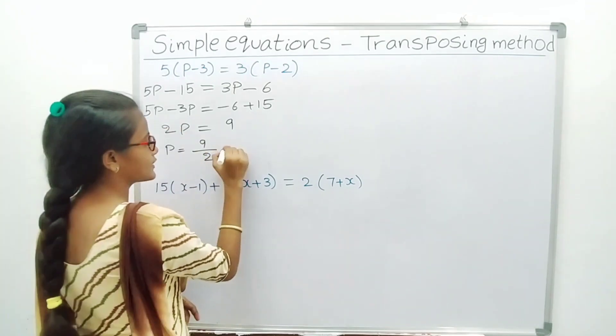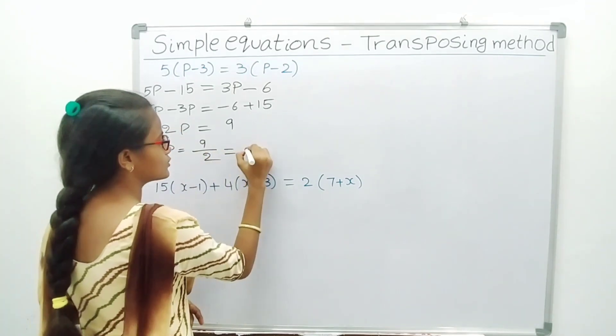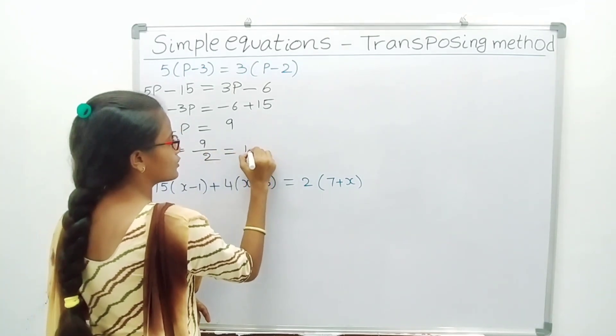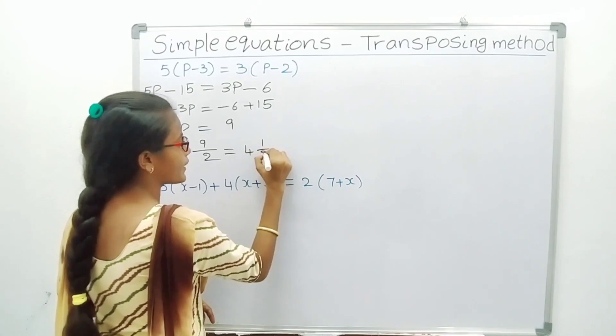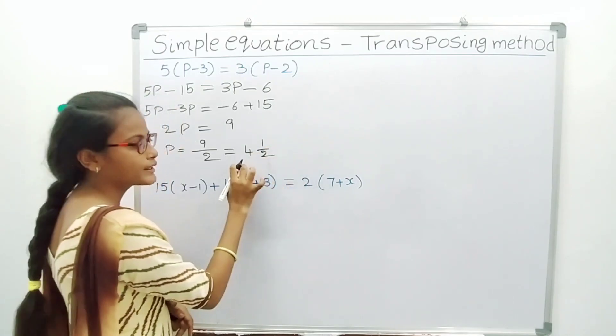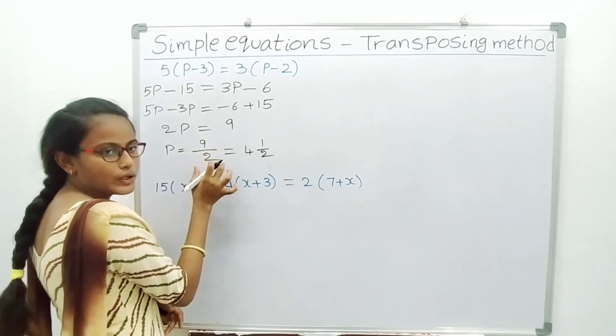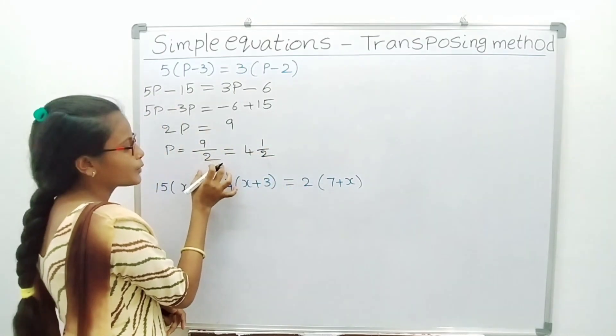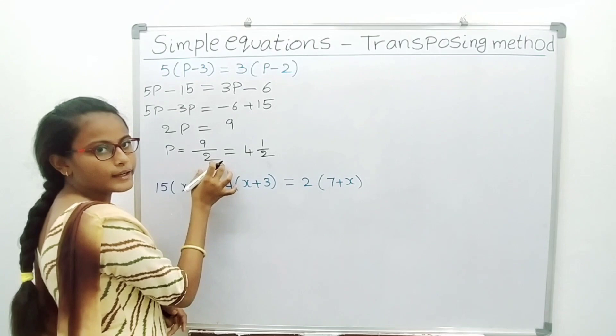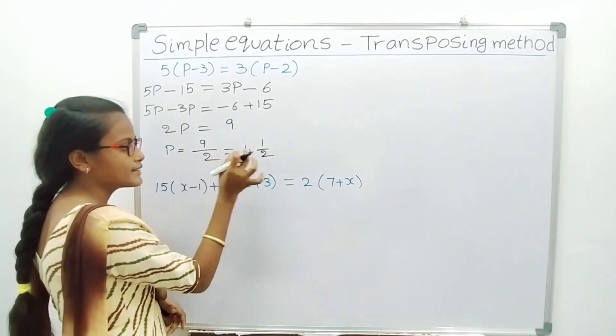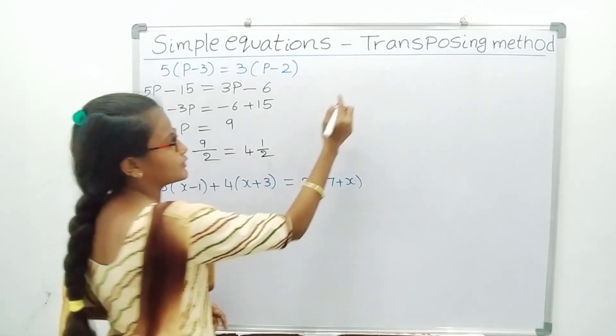That is equal to 4 and 1 by 2. How does it come? 9 by 2 is an improper fraction, so I change it as a mixed fraction.